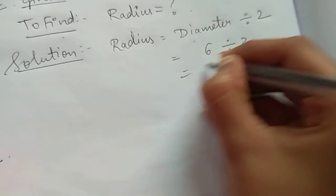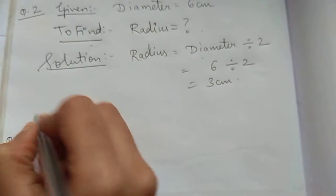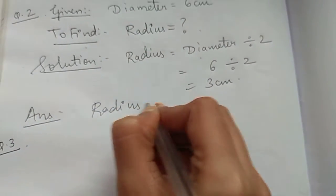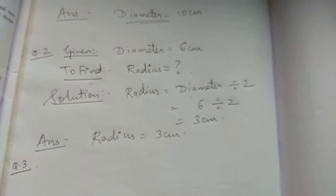So how much is diameter? 6. 6 divided by 2 is how much? 3 cm. So answer, radius is equal to 3 cm.